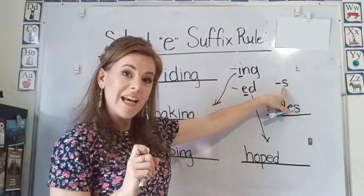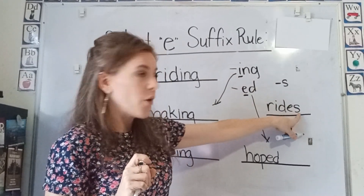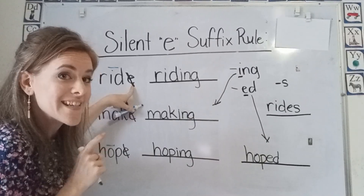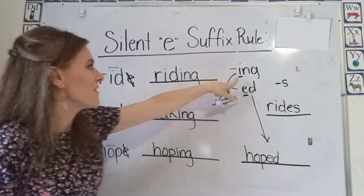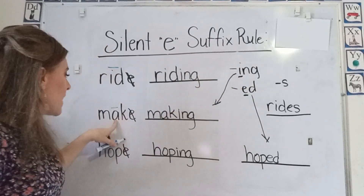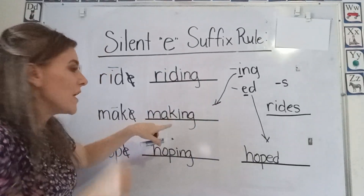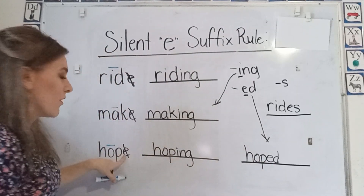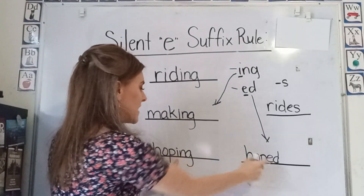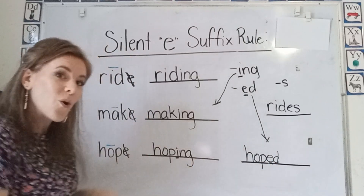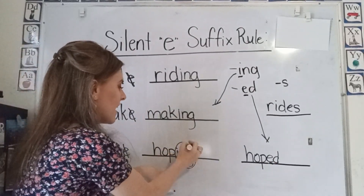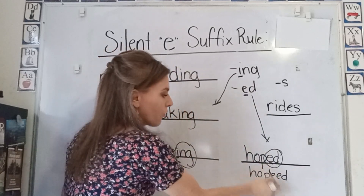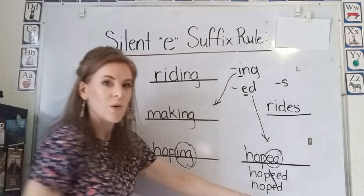Therefore, since we have the silent e, we drop the e and add our suffix that begins with a vowel. If our suffix does not begin with a vowel, we just add it to the end of our word and keep our silent e. Here we have 'ride' with a silent e, so we drop it and add our suffix that begins with a vowel. Here we have a long a and a silent e, so we drop it and add our suffix. You do not write the word without dropping the e — you drop the e and add your suffix.